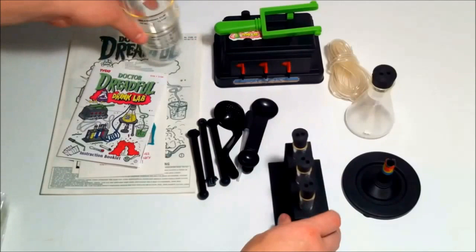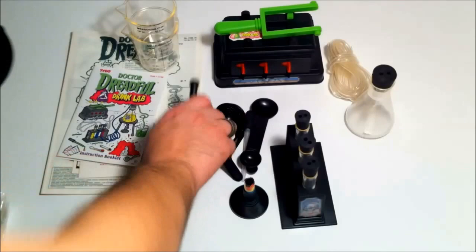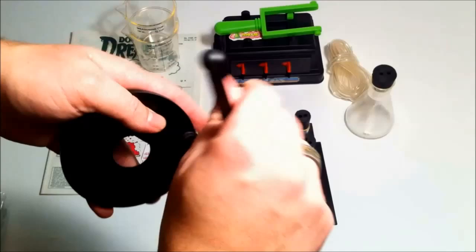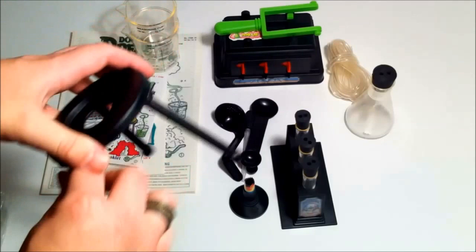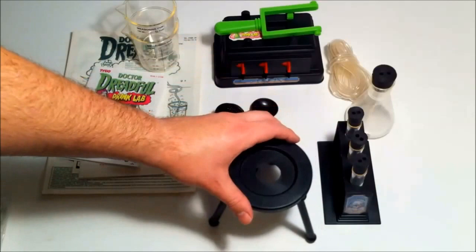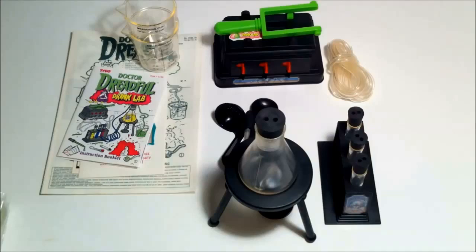Alright. And next we'll pick our flask stand, put it together. These legs just snap in there pretty easily. And your burner thing just goes like this. And the flask goes on top of it just like that.